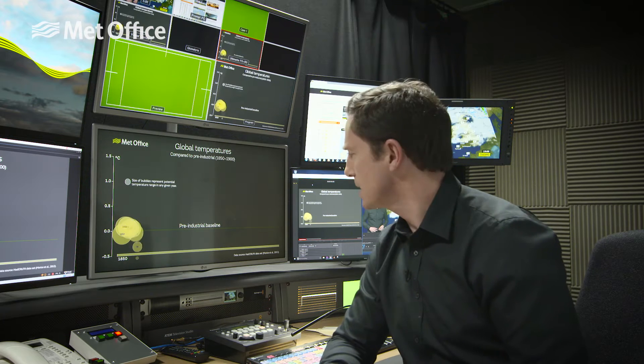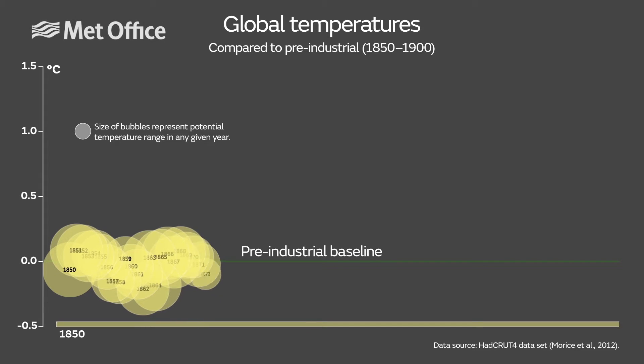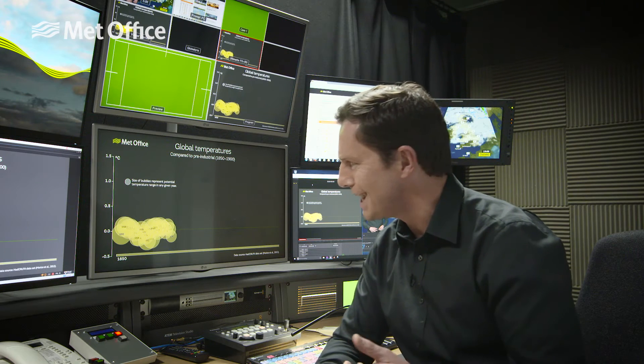2016 has globally been the warmest on record. Our records for measuring temperatures around the globe go back to the 1850s. This graph shows how temperatures vary through time, each circle representing a year. The size of the circle represents the uncertainty, and back in the 1850s our ways of measuring the temperature weren't as sophisticated as they are now.